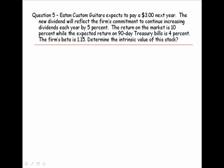The return on the market is 10%, while the expected return on 90-day T-bills is 4%. The firm's beta is 1.15. Determine the intrinsic value of the stock.